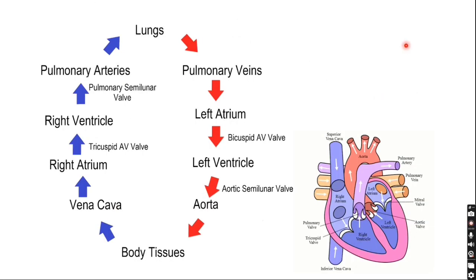Repeating the circulation: the body tissues release deoxygenated blood, which drains via the superior and inferior vena cava into the right atrium, then right ventricle, then through the pulmonary trunk to the lungs. In the lungs, gas exchange occurs during respiration. The oxygenated blood returns through the pulmonary veins to the left atrium, then the left ventricle pumps it through the aorta to the body tissues.